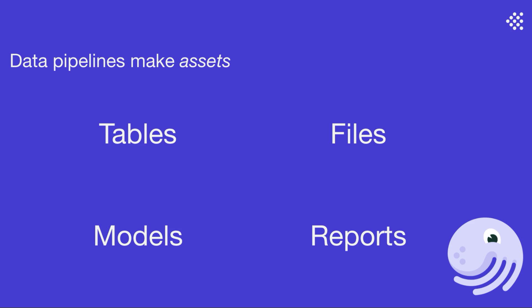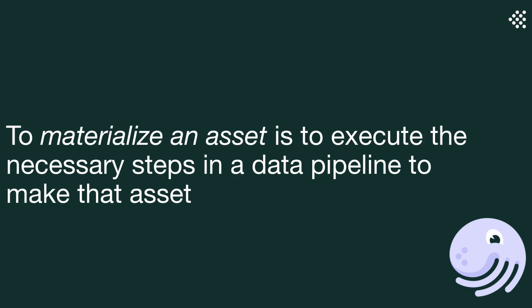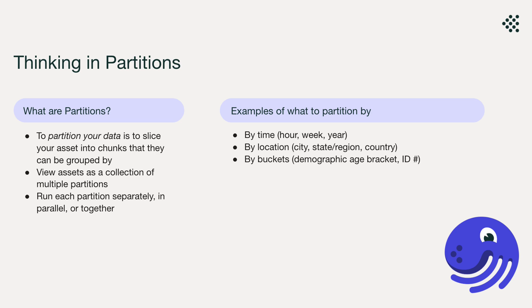As a quick refresher, assets are produced by your data pipelines, ranging from files and tables to reports and machine learning models. To materialize an asset is to execute the necessary steps in a data pipeline to create that asset. And when it comes to data pipelines, to partition your data is to slice your data into chunks that can be grouped by — for instance, sales data can be aggregated by time-based dimensions like hour, week, or year, while customer information can be partitioned by country of residence, demographics, or any other category you can segment your population into.